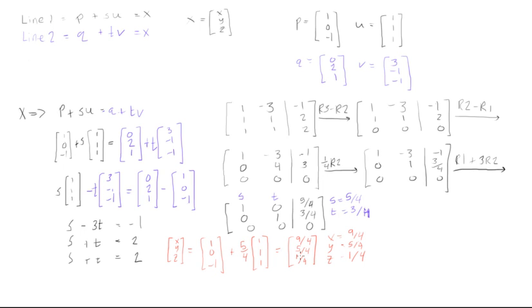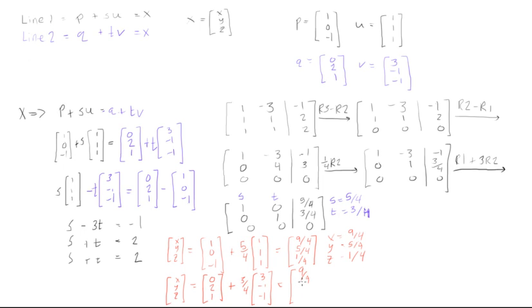Let's confirm with Q + tV: (0, 2, 1) + (3/4)(3, -1, -1) gives (0 + 9/4, 2 - 3/4, 1 - 3/4) = (9/4, 5/4, 1/4). Both equations give the same result, confirming the lines intersect at the point (9/4, 5/4, 1/4).